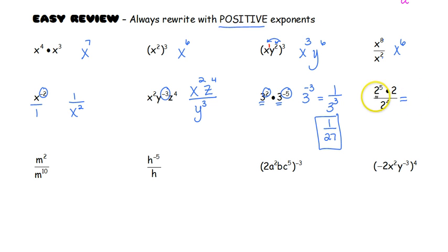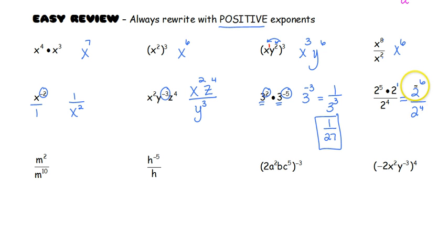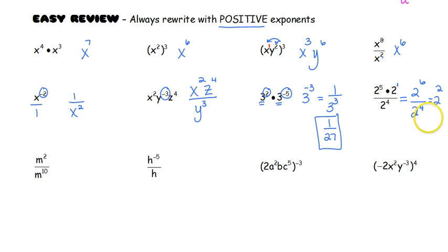We have 2 to the fifth times 2 to the first — same base, so I add those exponents, giving me 2 to the sixth power, all over 2 to the fourth. I still have the same base, so I'm going to subtract since I'm dividing those bases. 6 minus 4 gives us 2 squared. Well, 2 squared is just 4. So make sure that you multiply those numbers out — you don't want to leave this as 3 cubed or 2 squared.